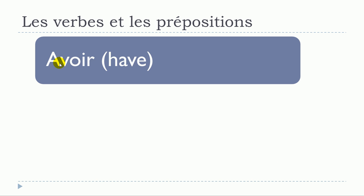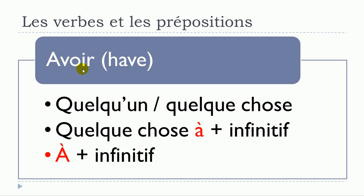We'll start with the first verb: avoir, to have. Let's see the structures we can make with this verb. The first one is avoir quelqu'un or quelque chose — no preposition. The second structure is avoir quelque chose à plus infinitif. Or just avoir à plus infinitif.